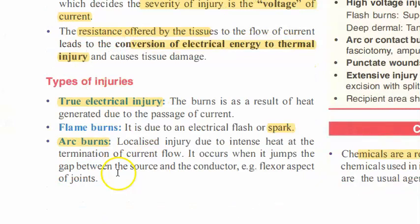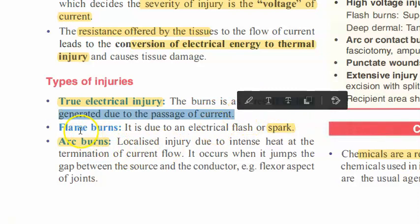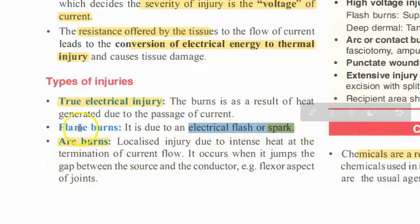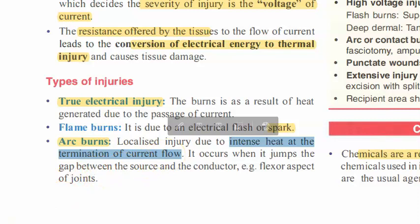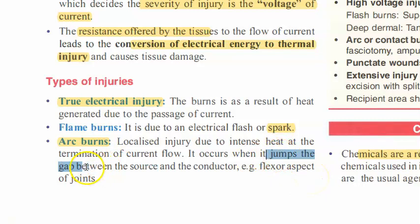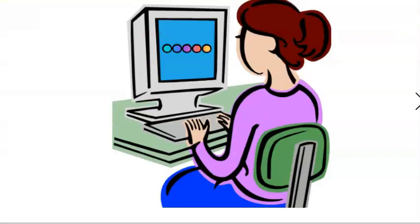Types of injuries: you have true electrical injuries because of heat generated by passage of current; flame burns because of an electric flash or spark; and arc burns. Arc burns involve intense heat at the termination of current flow at the flexor aspect of joints — the current jumps the gap between the source and the conductor at the flexor aspect of joints, causing arc burns.